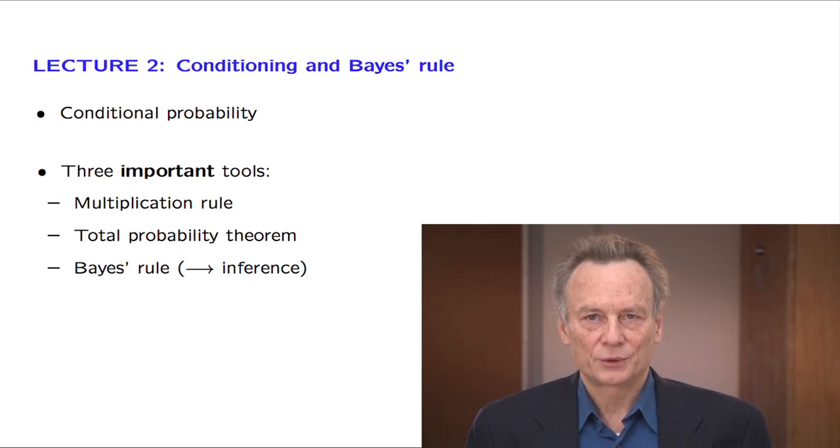including the Bayes rule, which provides a systematic way for incorporating new evidence into a probability model. The three tools that we introduce in this lecture